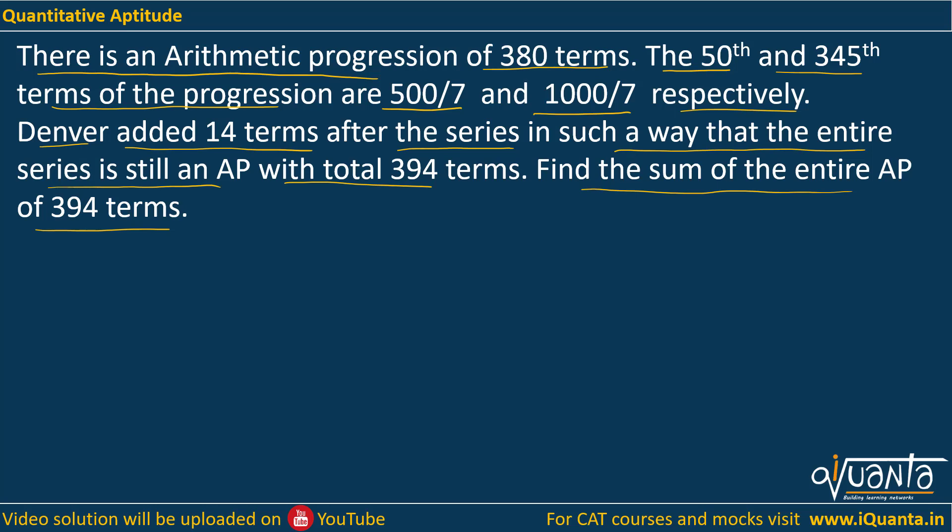So ultimately what we have to do is find the sum of the entire series. You must be knowing what is the sum of an AP. Sum of an AP is determined by multiple formulas. One of them is n upon 2, a plus l. This formula is applicable when I have the number of terms n, the first term of the AP a, and the last term of the AP l.